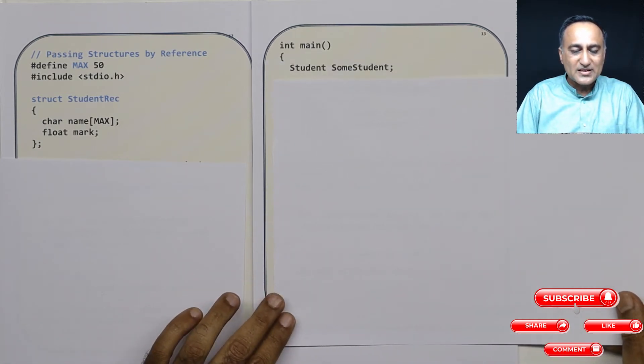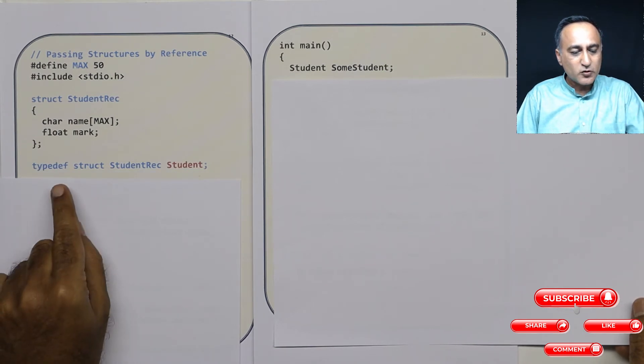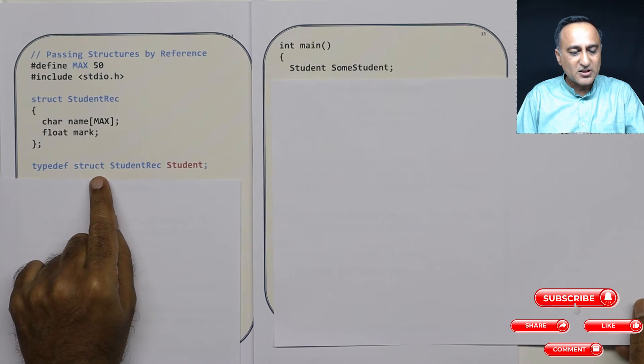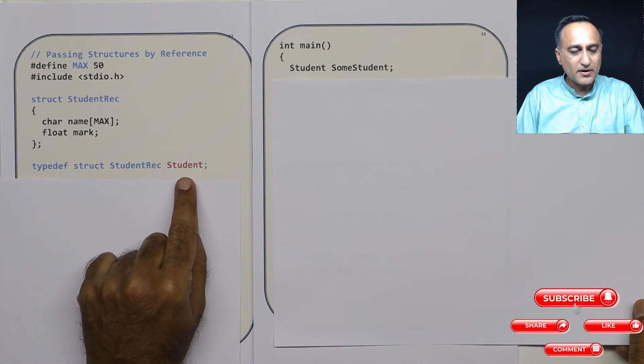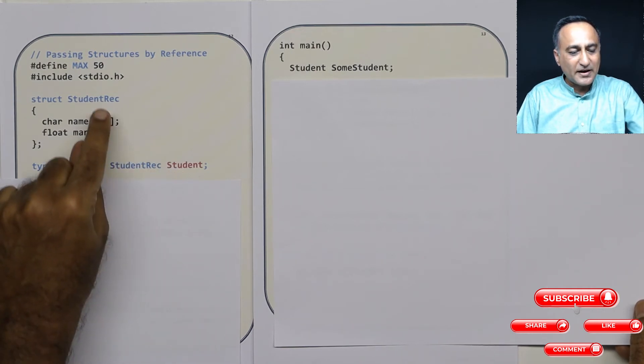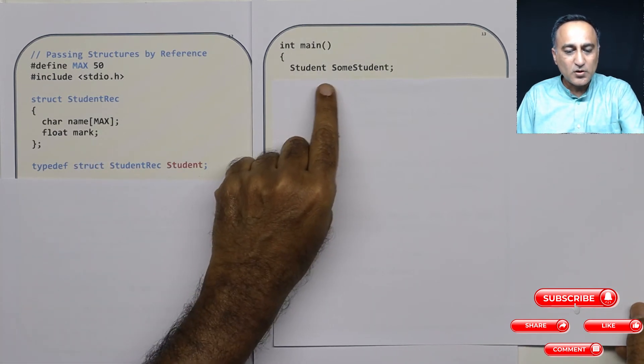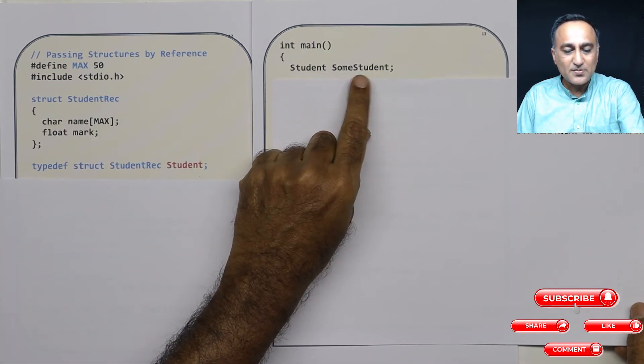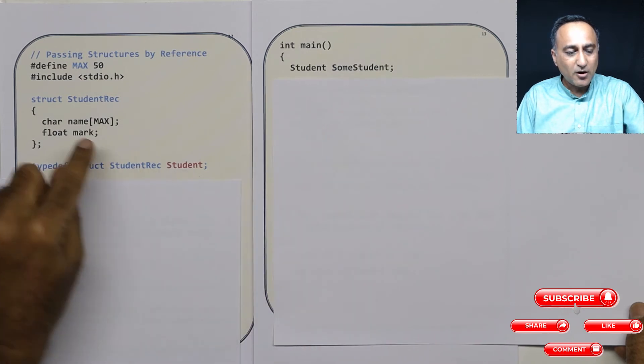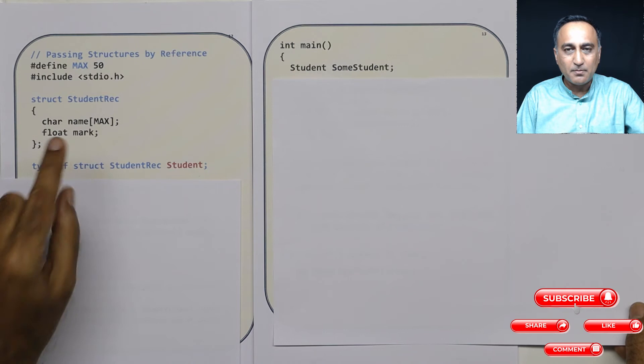What I'm doing here is I have this typedef which has been created globally. So I have said typedef struct student record student. So now this student is a typedef creation. That means it represents this particular template.